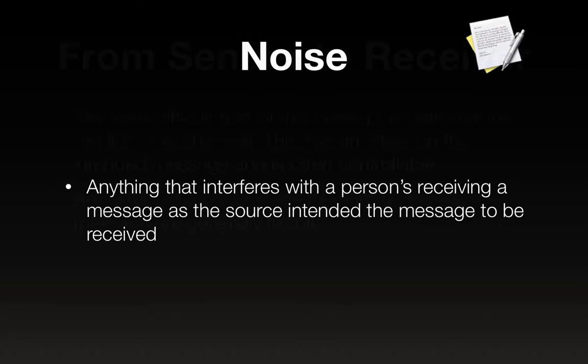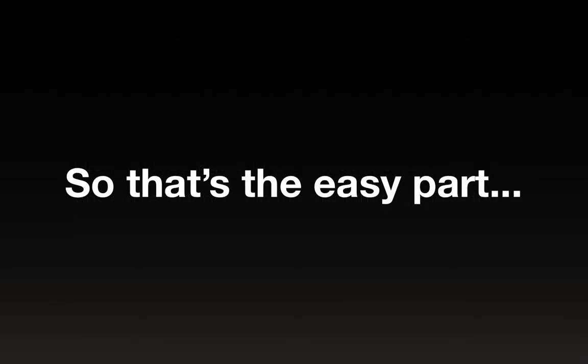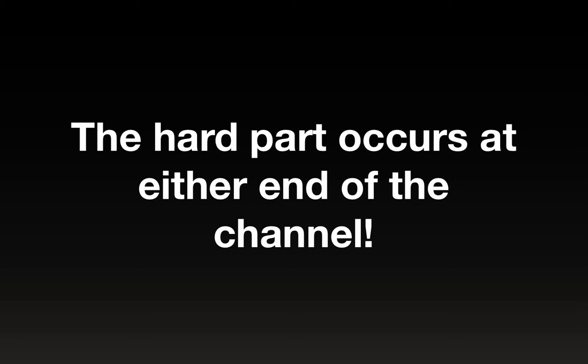From sender to receiver, this is the least difficult part of the communication concept — it's the medium, or in other words, the channel. It has an effect on the intended message and it is often controllable. Any errors that occur to the medium that impede the message are generally fixable. So that's the easy part, relatively speaking — it's kind of easier said than done, but it's doable. The hard part occurs at either end of the channel.